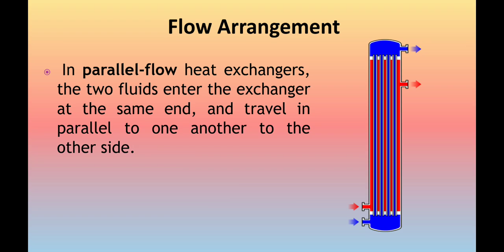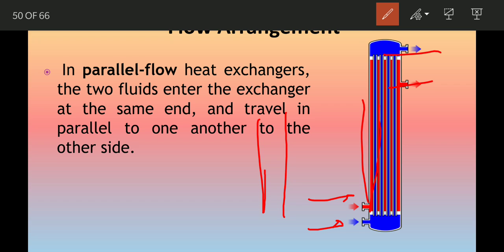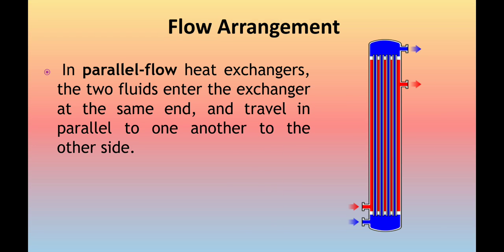The first type is the parallel flow heat exchanger. In a parallel flow heat exchanger, both fluids — the hot fluid and the cold fluid — enter from the same end of the exchanger. As you can see in the diagram, the red represents the hot fluid and the blue represents the cold fluid. Both enter from one end and come out from the other end together. This is called the parallel flow arrangement.